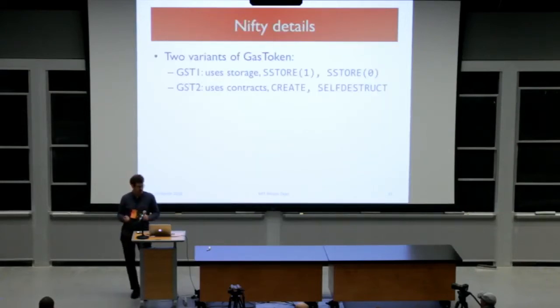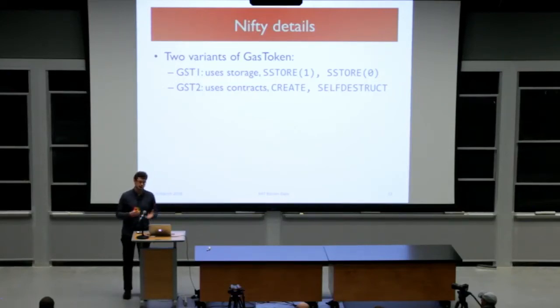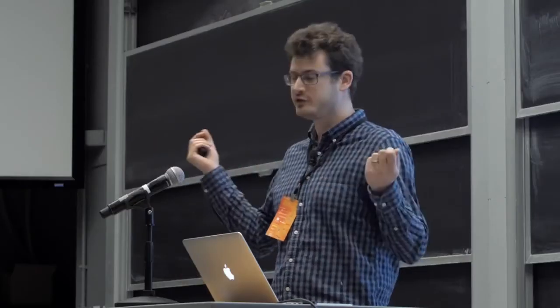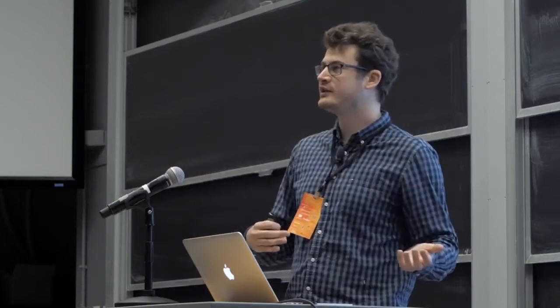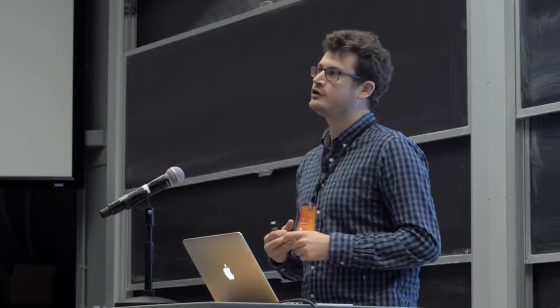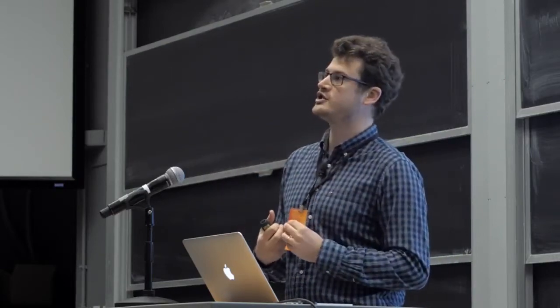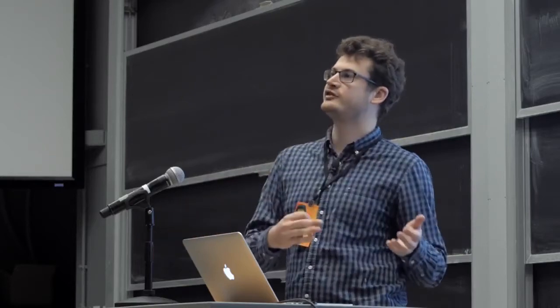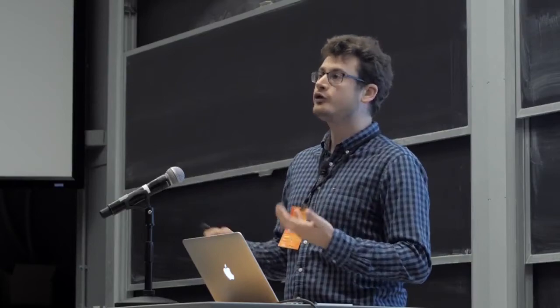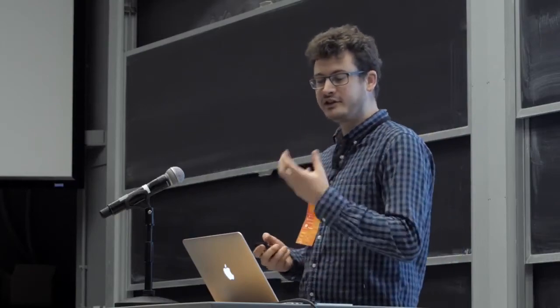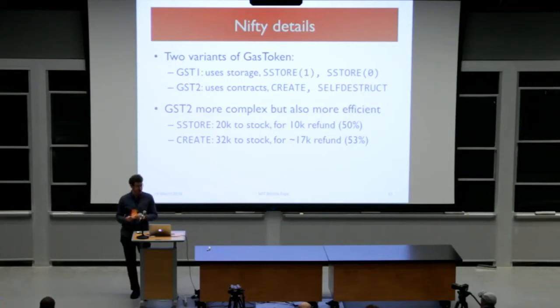There are two variants of Gas Token we deployed: GST1 and GST2. GST1 uses standard token storage - the SSTORE instruction in the EVM - storing a bunch of ones, which are expensive because every miner must store them, and then replacing them with zeros for a refund. GST2 uses smart contract creation and deletion: when you completely remove a smart contract from the blockchain, Ethereum also gives you a refund to incentivize removing useless contracts. The second variant is more complex to set up but also more efficient.